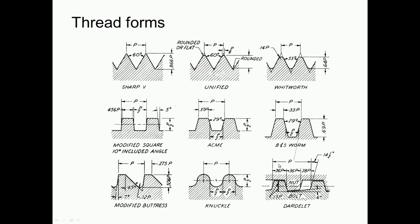Various thread forms are used in practice. The sharp V thread has a sharp crest; when the crest is made rounded or flat, it is called unified thread. Sharp V and unified threads both have a 60 degree included angle. Whitworth thread has a 55 degree included angle. Modified square thread has a 10 degree included angle and is used in power screws. Acme thread has a 29 degree included angle. There are also modified buttress and knuckle threads.